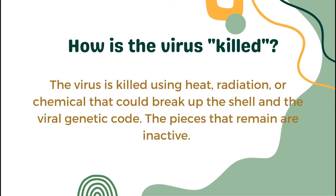How is the virus killed? The virus is killed using heat, radiation, or chemicals that could break up the shell and the viral genetic code. This destroys the pathogen's ability to replicate but keeps it intact so the immune system can still recognize it. The pieces that remain are inactive, which means they can no longer cause disease but could still activate the body's immune system.